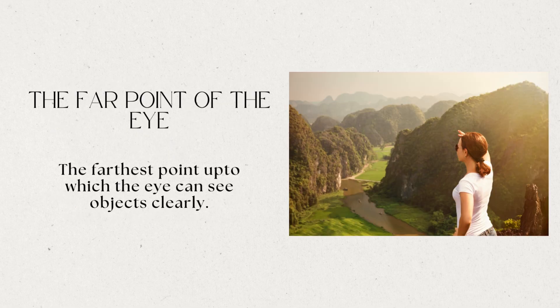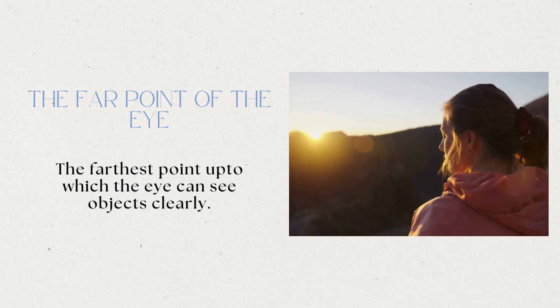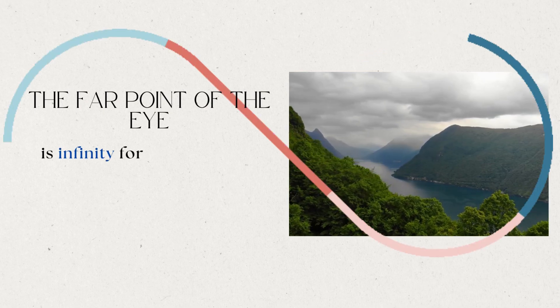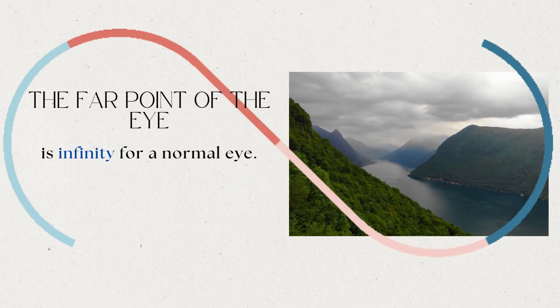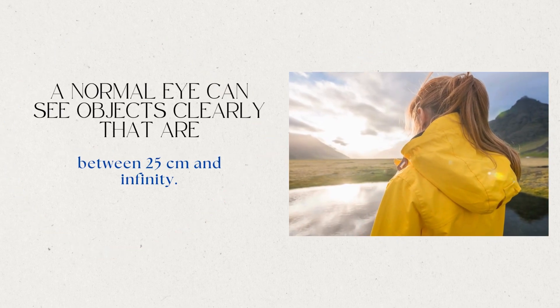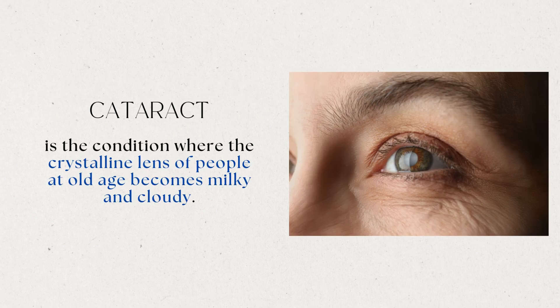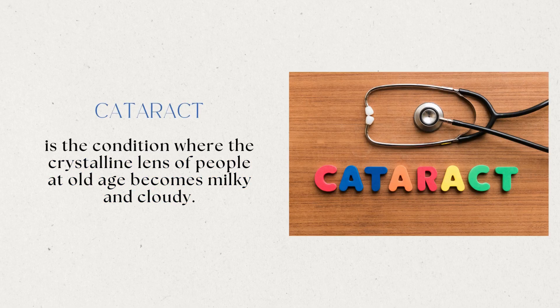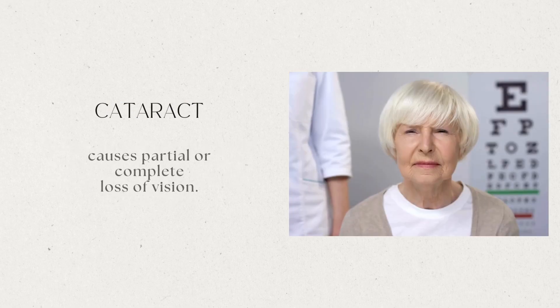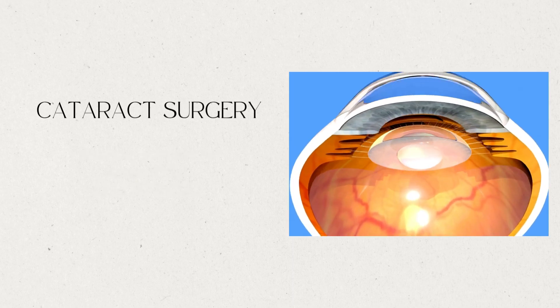The farthest point up to which the eye can see objects clearly is called the far point of the eye. It is infinity for a normal eye. A normal eye can see objects clearly that are between 25 cm and infinity. Sometimes, the crystalline lens of people at old age becomes milky and cloudy. This condition is called cataract. This causes partial or complete loss of vision. It is possible to restore vision through cataract surgery.